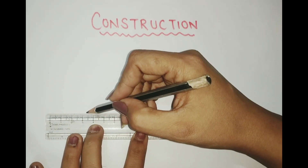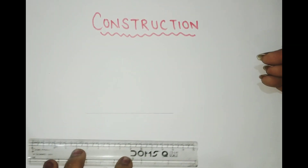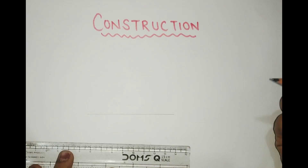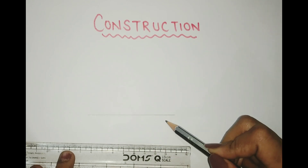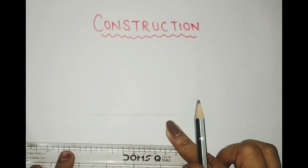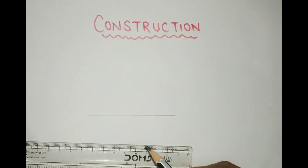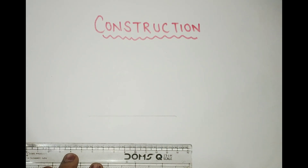What you have to do is draw a line segment. I hope you know the difference between a line and a line segment. If you don't, I've made a separate video about lines, line segments, and rays — I'll put the link in the description. So here I've drawn a line segment of any length; I'm not taking a fixed length like 5 cm or 10 cm.